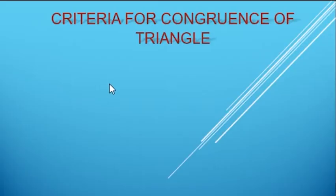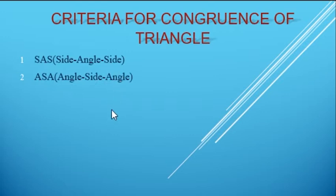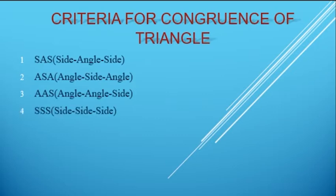Criteria for congruence of triangle: The first criteria is Side Angle Side. Second, Angle Side Angle. Third, Angle Angle Side. Fourth, Side Side Side. And the last one is RHS — right angle, hypotenuse side.